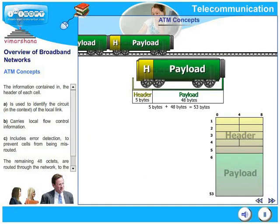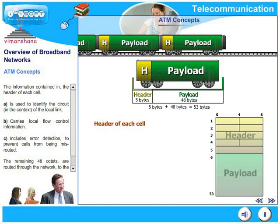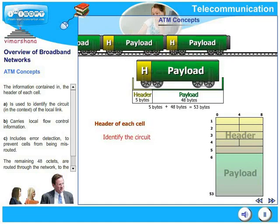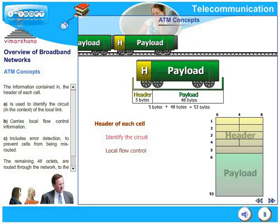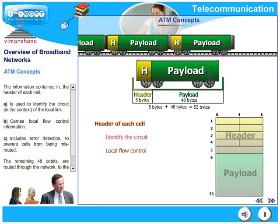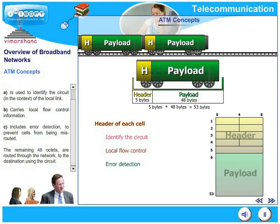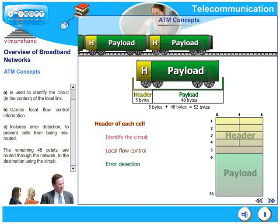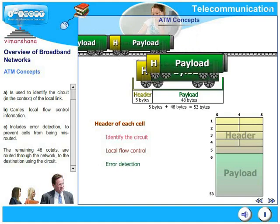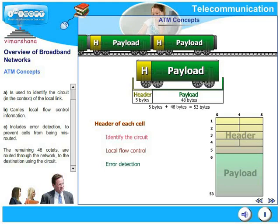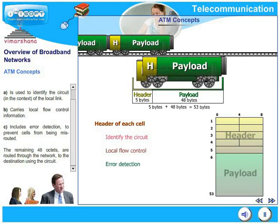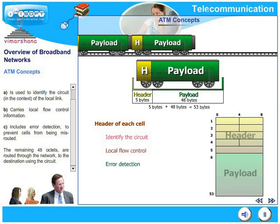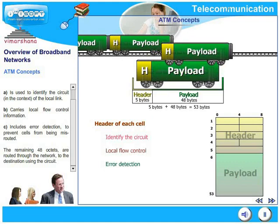The information contained in the header of each cell is used to identify the circuit of the local link, carries local flow control information, and includes error detection to prevent cells from being misrouted. The remaining 48 octets or 48 bytes are routed through the network to the destination using the circuit.